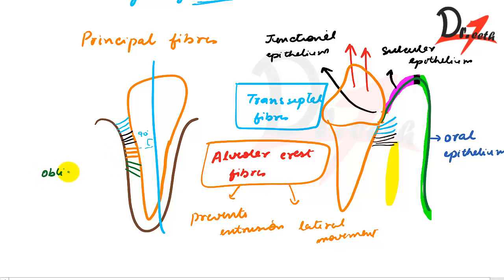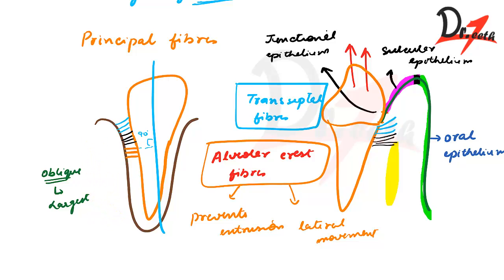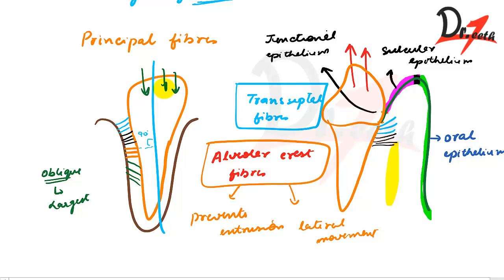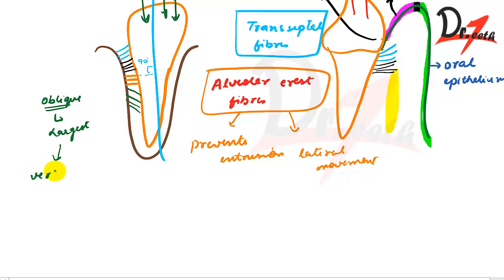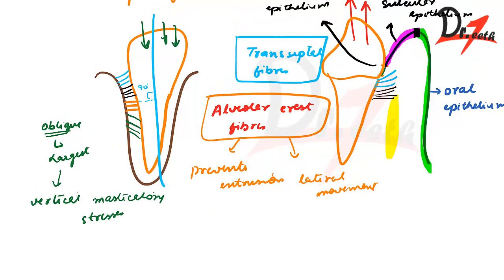The oblique fibers extend in a coronal direction from the cementum — inserting towards the crown. They are the largest group and bear the brunt of vertical masticatory stresses, transforming them into tension on the alveolar bone.